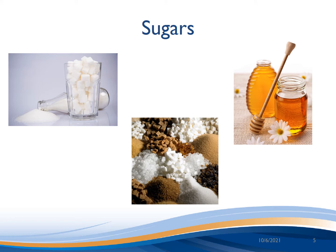Sugars are carbohydrates that can affect your blood sugar or blood glucose, your weight, and even your blood fats known as your cholesterol levels. Some examples are white sugar, brown sugar, honey, maple syrup, or high fructose corn syrup, just to name a few. There is no advantage to those with diabetes in using one type of these sugars over another.